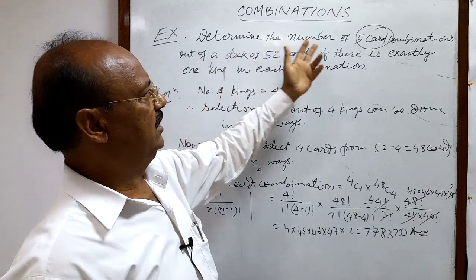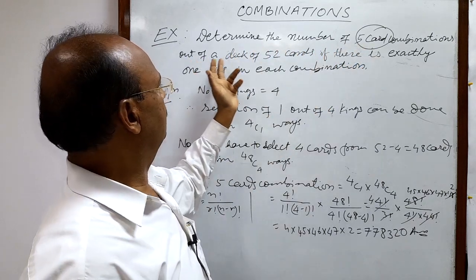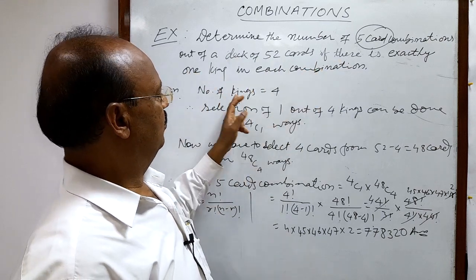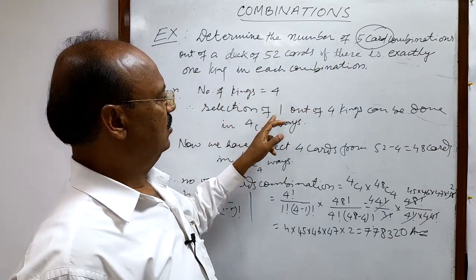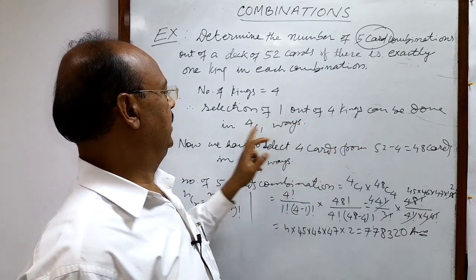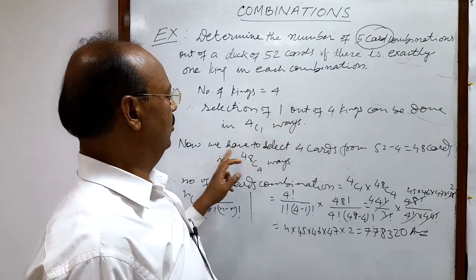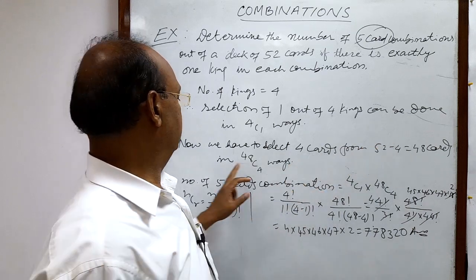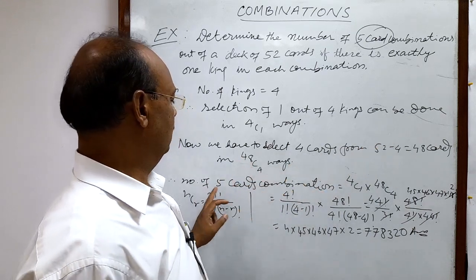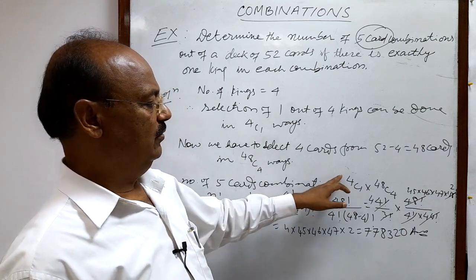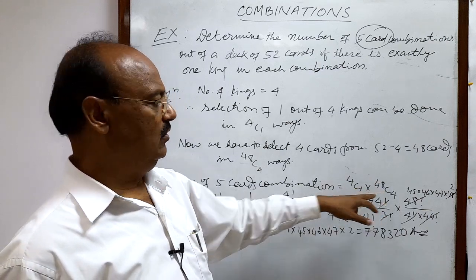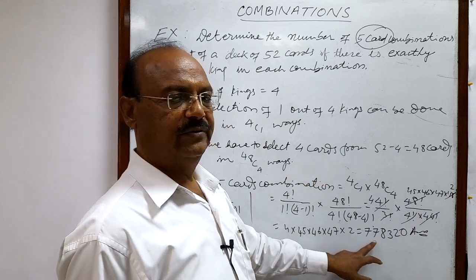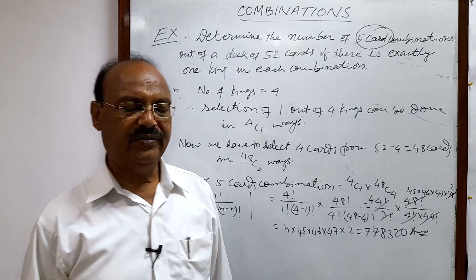The question becomes: determine the number of 5 card combinations out of a deck of 52 cards if there is exactly one king in each combination. Number of kings is 4; selection of 1 out of 4 kings can be done in 4C1 ways. We select 4 cards from 52 minus 4, which is 48 cards, in 48C4 ways. So number of 5 card combinations is 4C1 × 48C4, giving the same answer: 778320.